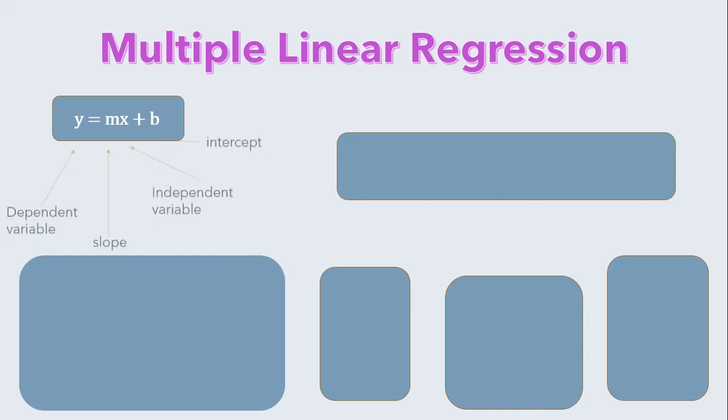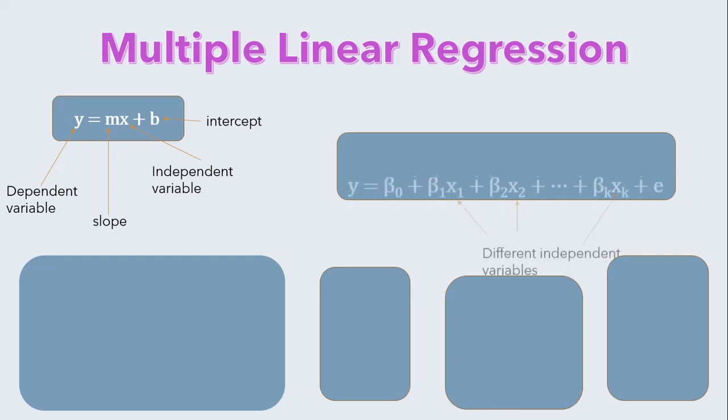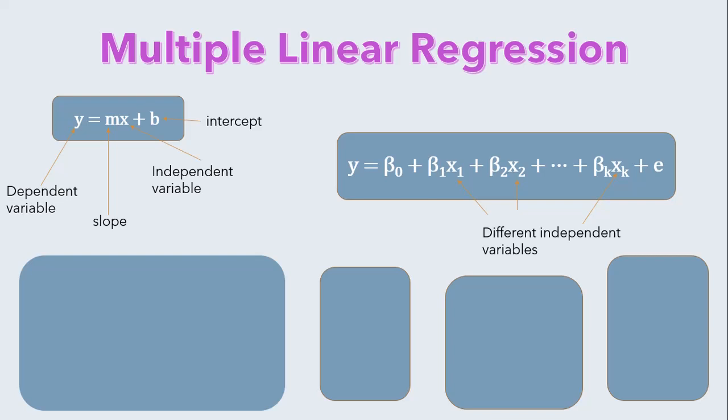Here m is the slope of the regression line and c denotes the intercept. Now multiple linear regression model with predictor variables x1, x2 up to xk and response y can be written as y equals beta 0 plus beta 1 x1 plus beta 2 x2 up to beta k xk plus e.